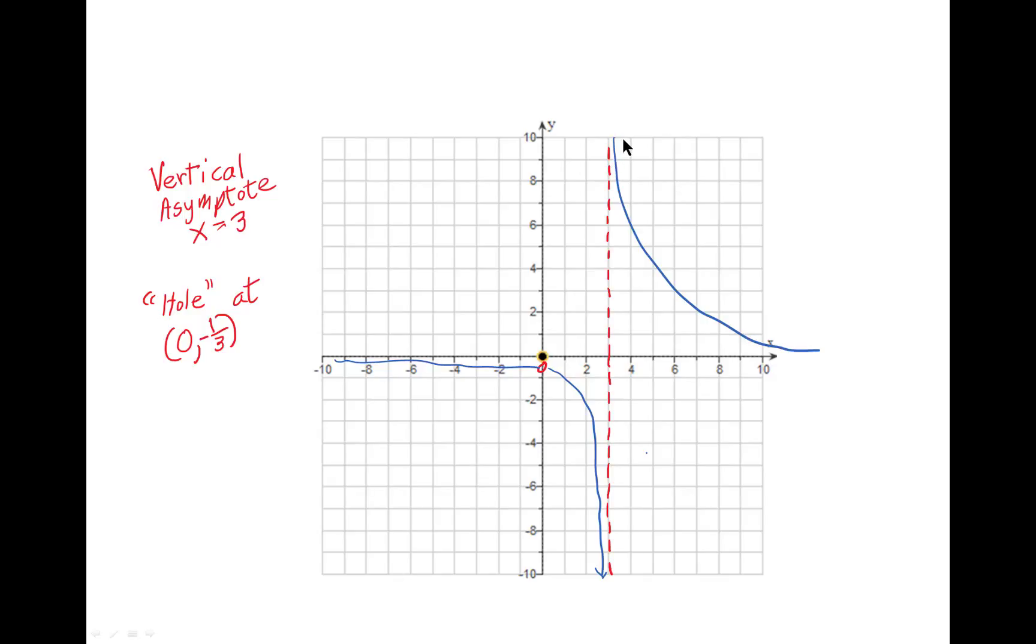But it's the vertical asymptote that separates the graph into two separate arms, because there cannot be a point that has x equals 3 in it.